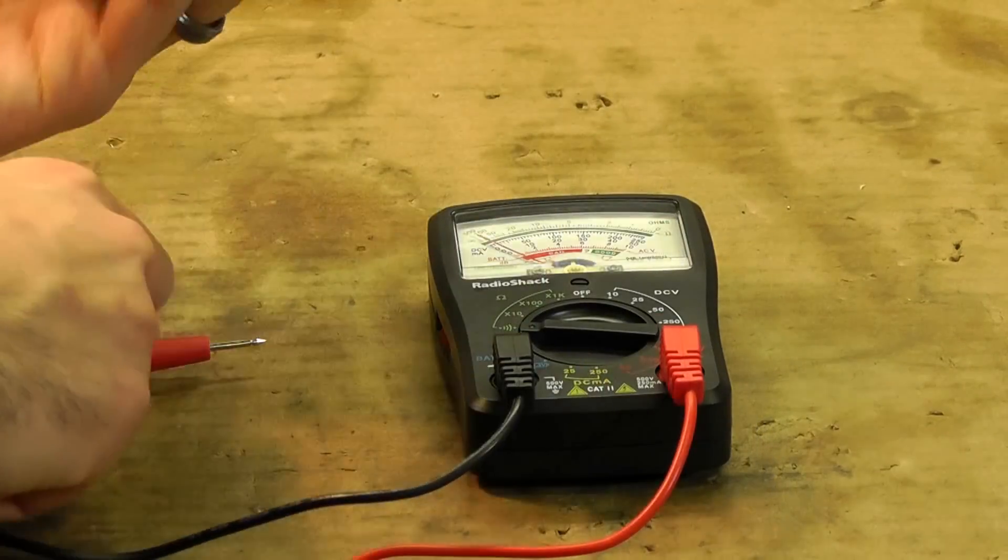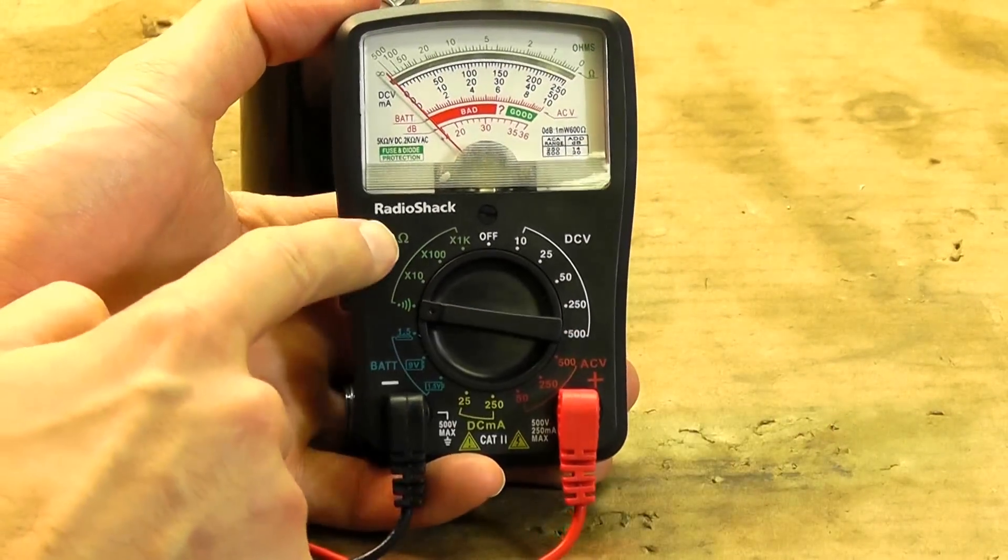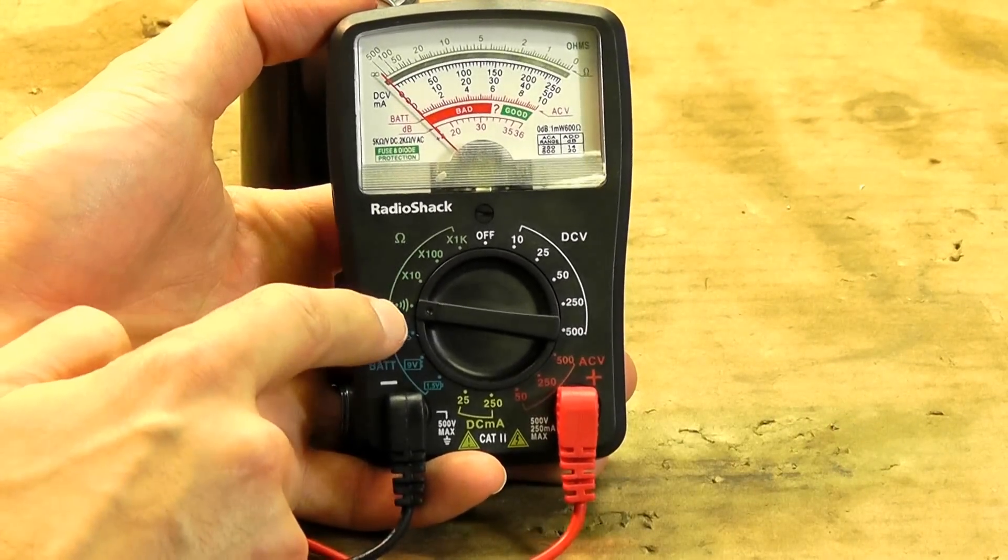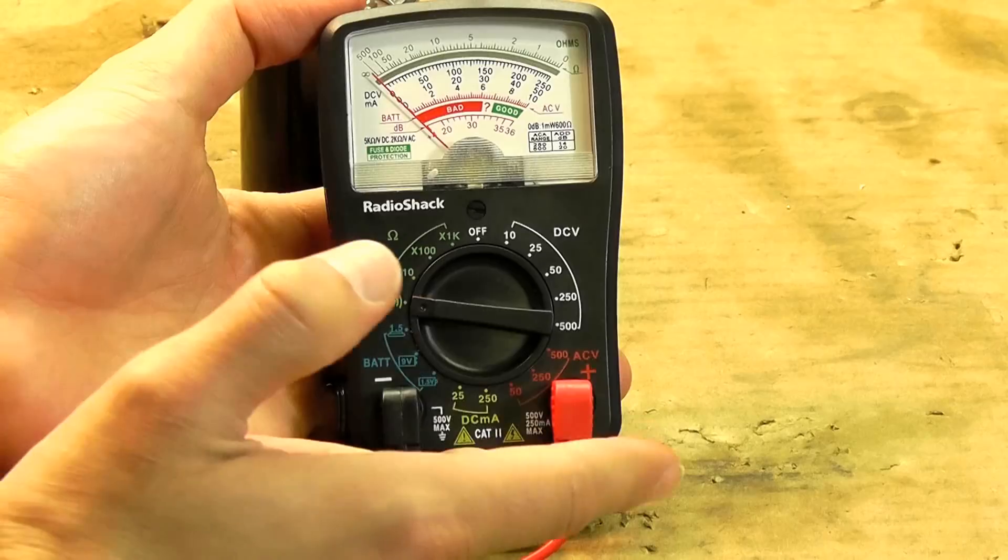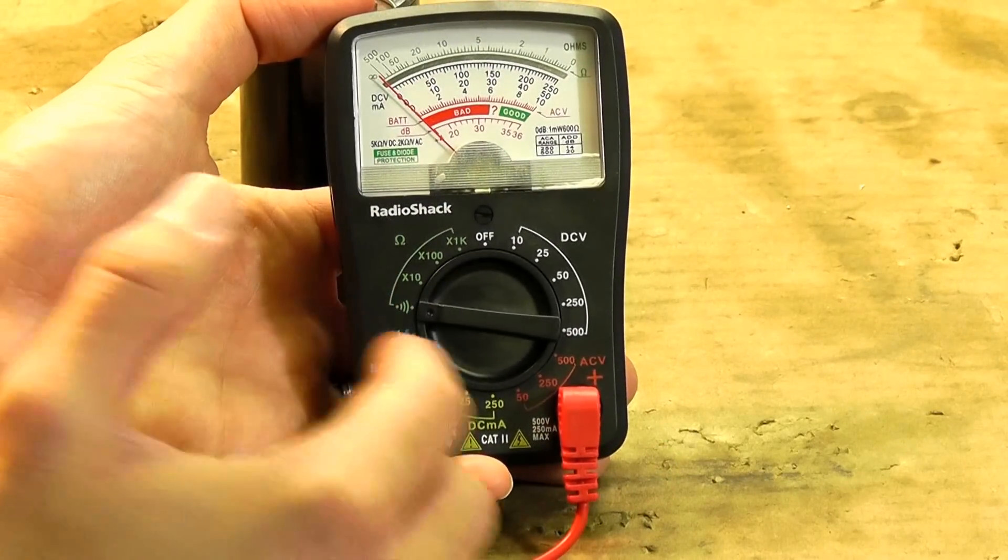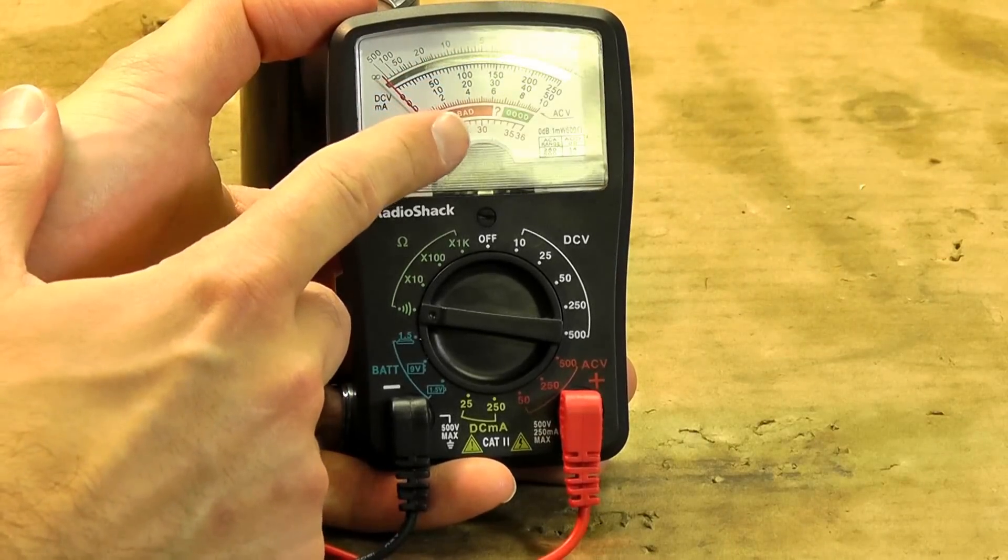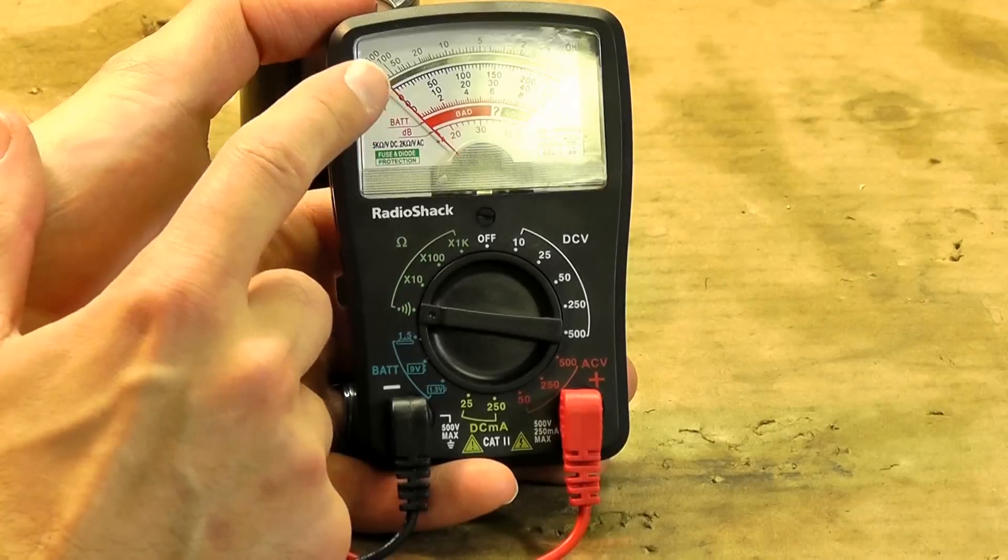We're going to take the voltage meter and set it on the ohm setting and on the audible setting so you can actually hear it when you touch both terminals, you'll hear a beep. And what this should do, being it's a good capacitor, the needle should jump up, spike up really quickly, not necessarily all the way to the right, however.